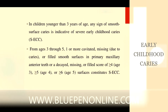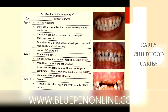Coming to the classification of early childhood caries, there are 3 types — Type 1, Type 2, and Type 3. This classification is given by Vainet. Type 1 is mild to moderate, Type 2 is moderate to severe, and Type 3 is severe. In Type 1 mild to moderate, the lesions will be usually isolated. It may involve molars and incisors, and the number of caries increases as cariogenic challenge persists. The cause is usually a combination of cariogenic semi-solid food and lack of oral hygiene, typically seen in children 2 to 5 years old.